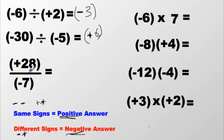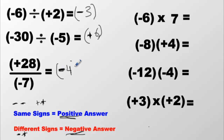Division sometimes can look like a fraction because that line in the middle means divide. So we look at the signs: positive divided by negative — they're opposites, they're different, they don't enjoy hanging out with each other. We get a negative number. Twenty-eight divided by seven is four, so we get negative four.